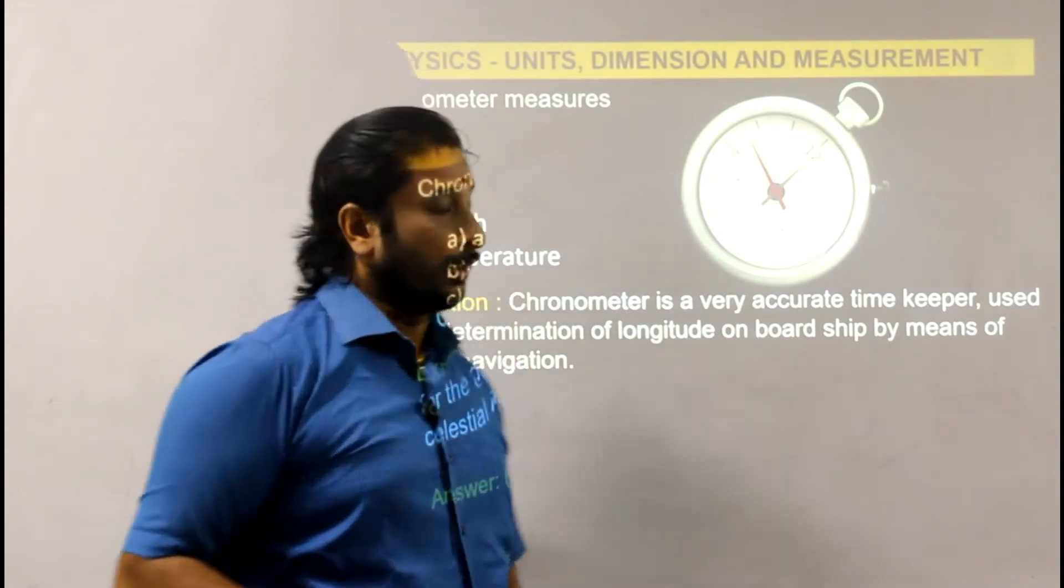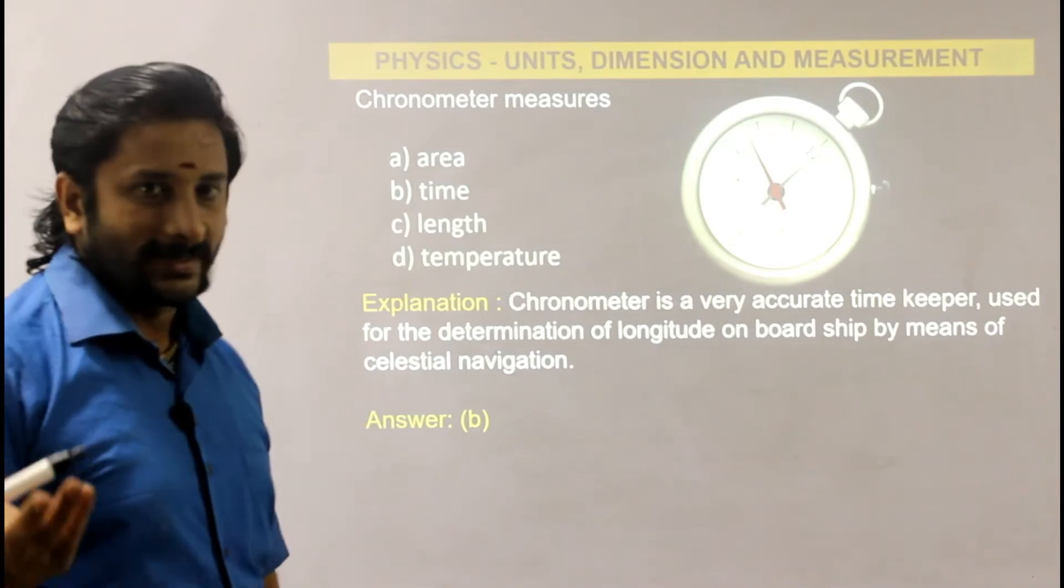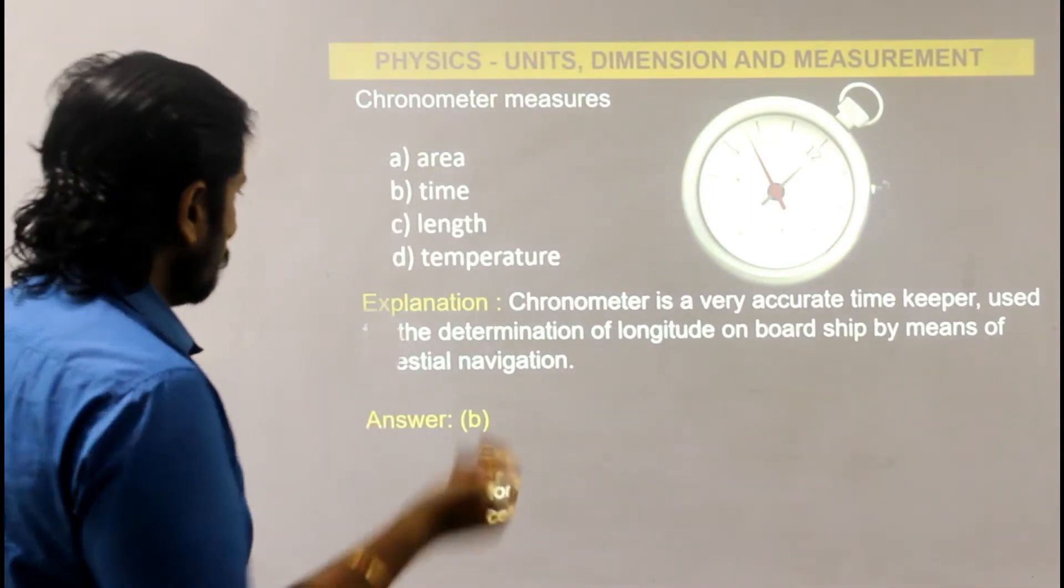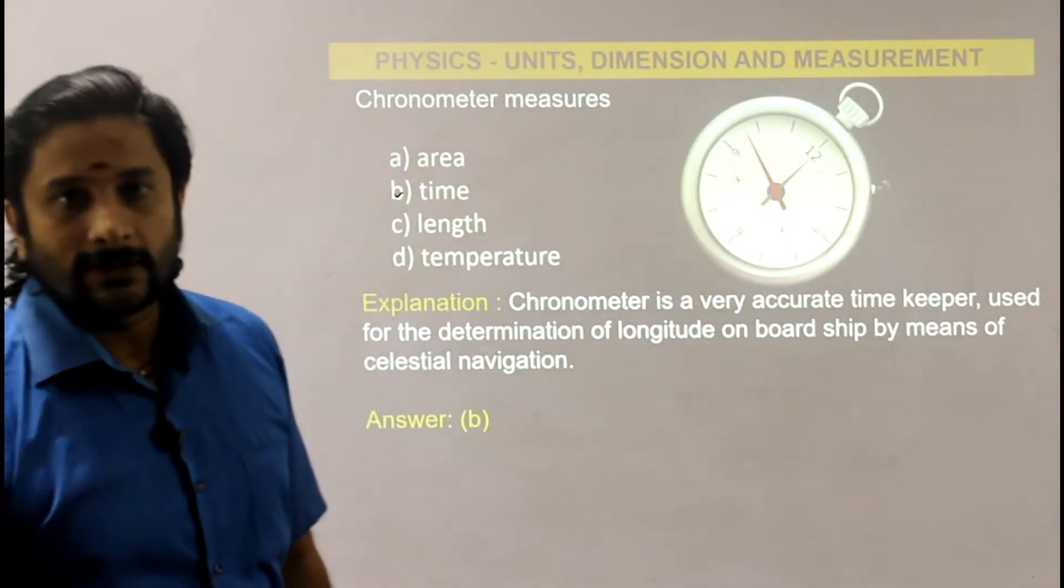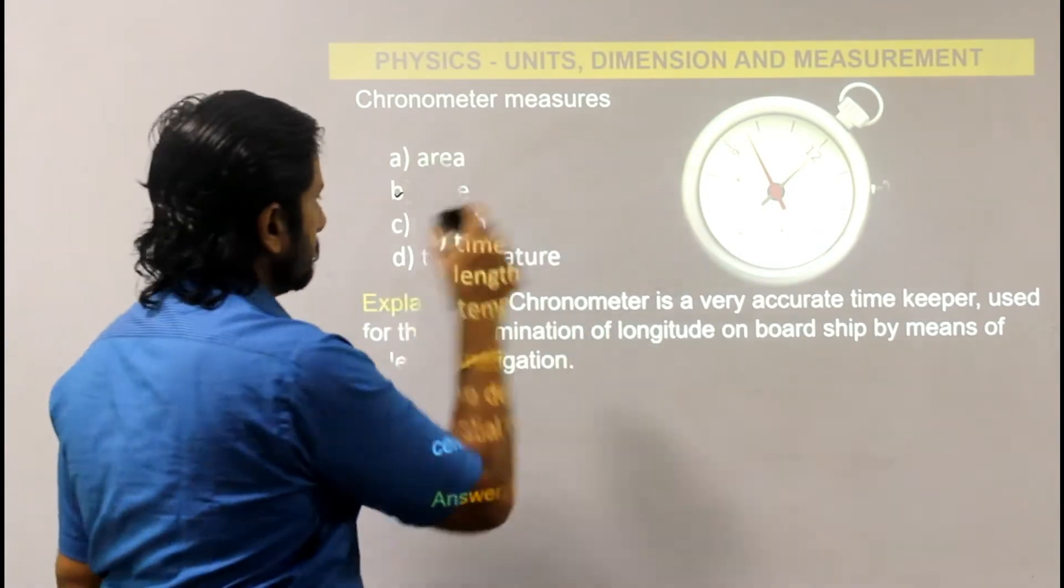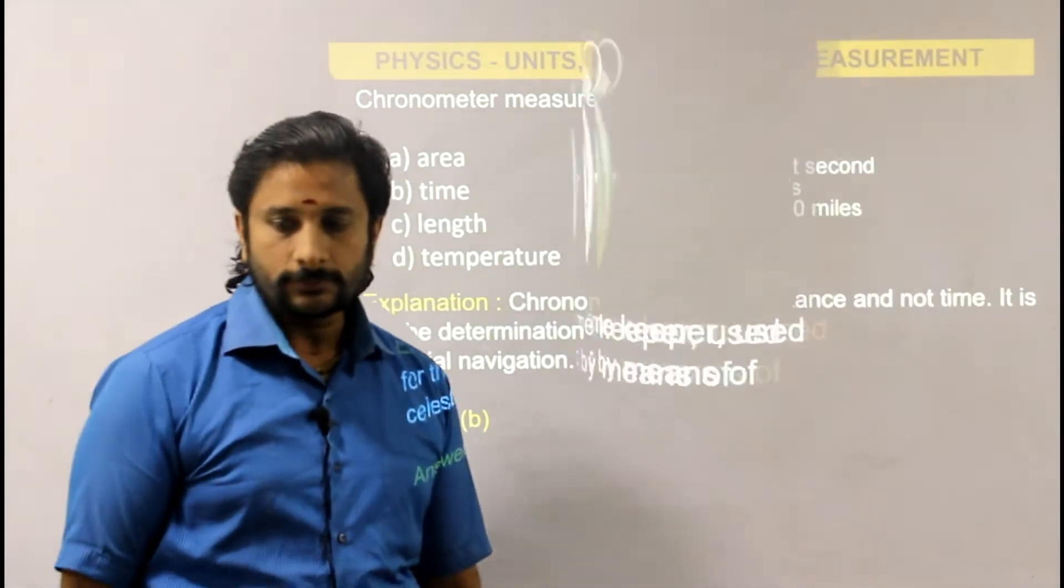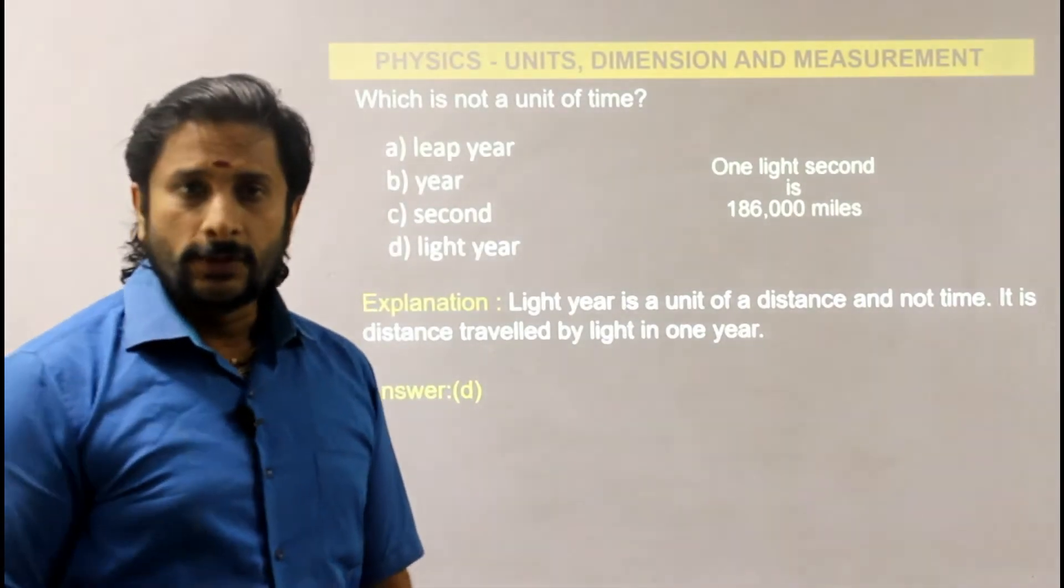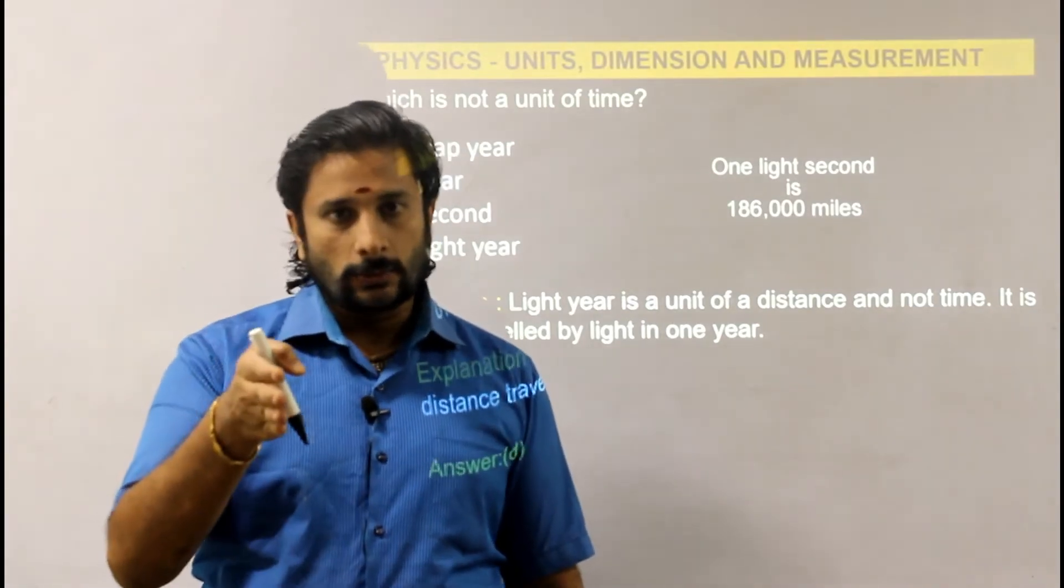The question follows: chronometer measures - is it area, or not time, maybe length, or temperature? The answer is option B: time. Chronometer is a device.